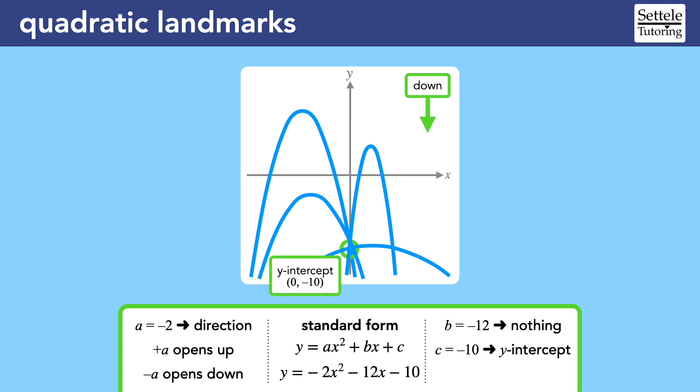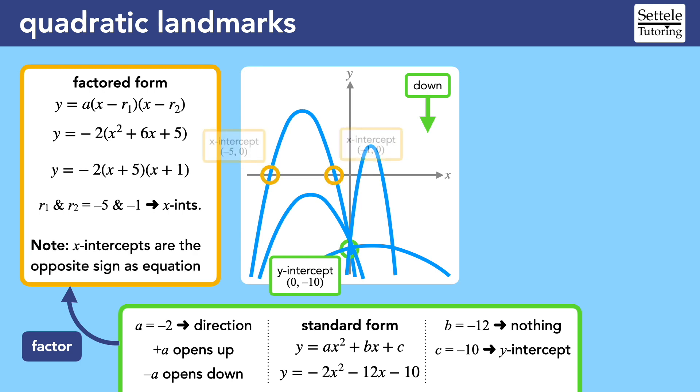To find out, we could use algebra to factor the equation into factored form. After dividing out the negative 2, we could factor the remaining quadratic, which would give us x-intercepts of negative 5 and negative 1. Plotting those points gives us a better idea of the overall shape.